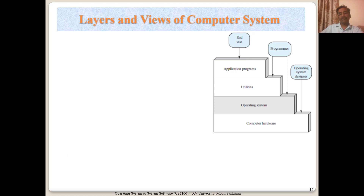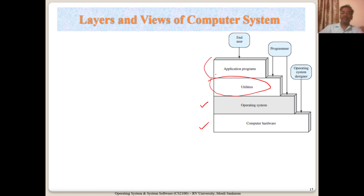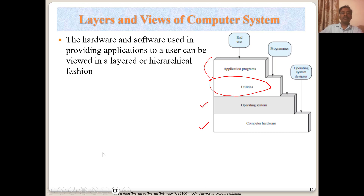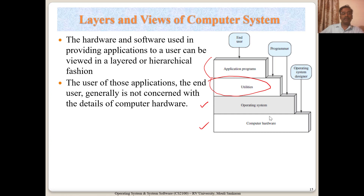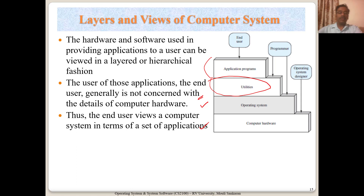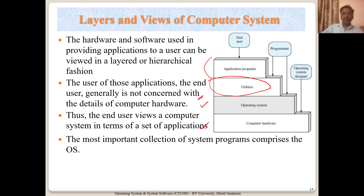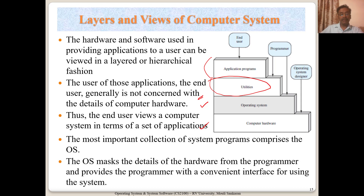What are the different layers of a computer system? We have hardware, then the OS running on it, then utilities — compilers, tools, IDEs like Visual C++ — then application programs. Hardware and software used in providing applications can be viewed in a layered or hierarchical fashion. The end user is generally not concerned with whether the hardware is ARM, Intel, or AMD based. The end user's view is simply running their applications efficiently. OS masks the details of hardware from the programmer and provides a convenient interface for using the system.